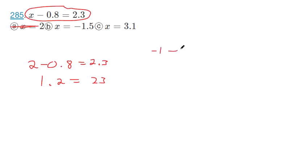So if you plug in negative 1 for x and then simplify the left side, negative 1 minus 0.8 gives you negative 1.8, not a solution. Oh wait, that's negative 1.5, I'm sorry. Let's try that again.